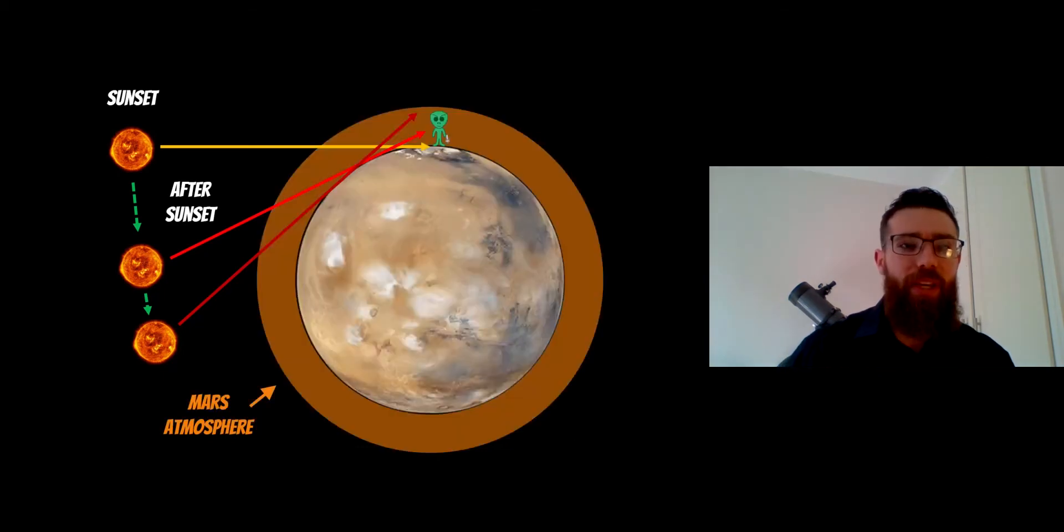The same thing happens with Mars. Mars has an atmosphere, not quite as significant as Earth's, but at sunset you will see the Sun at the horizon, and then it will disappear below the horizon and go through the atmosphere as before.